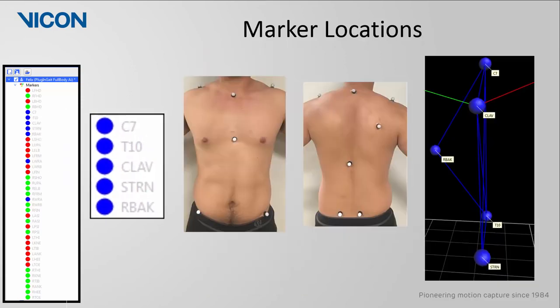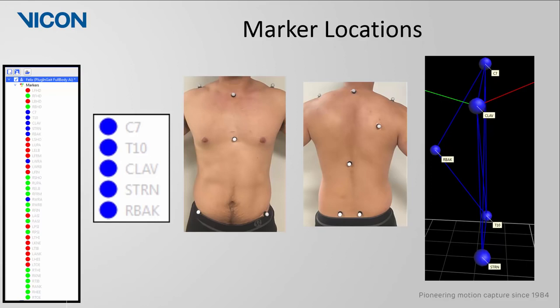The next five markers in blue are on the thorax. Three of these are located posteriorly. The C7 is the largest and most inferior vertebra in the neck. From there you can palpate these spinous processes and count down to the T10. There's also a right back marker which is placed on the right scapula and is used to provide asymmetry in the template to help distinguish between left and right. On the anterior thorax there is a clavicle marker which will be placed at the jugular notch where the clavicle meets the sternum and a sternum marker which will be located on the xiphoid process.